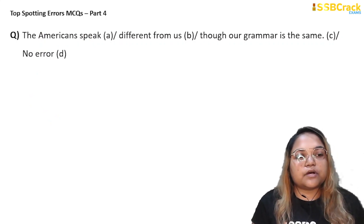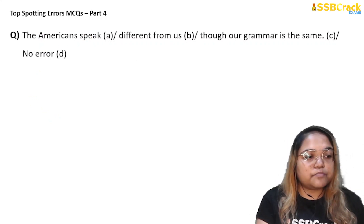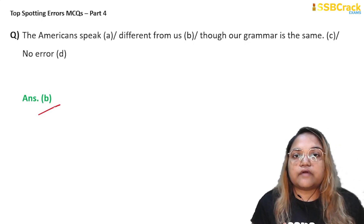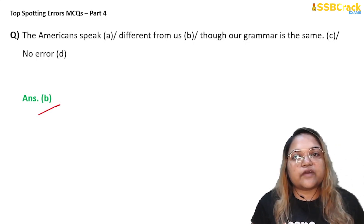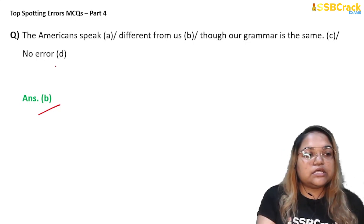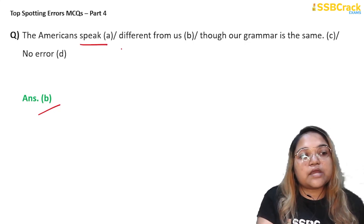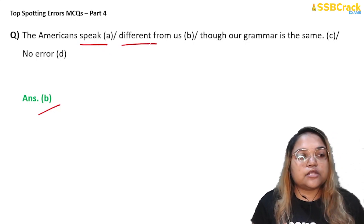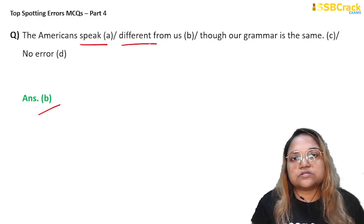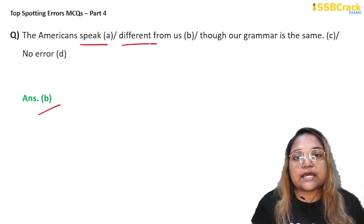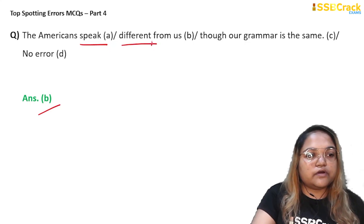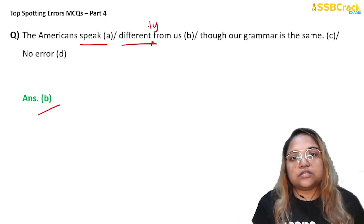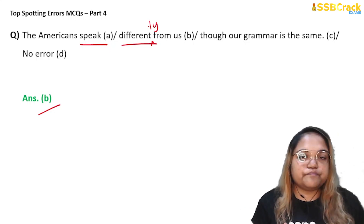Next question: 'The Americans speak different from us though our grammar is the same.' The error is in part B, so the answer is option B. To modify a verb, we use an adverb, but here the adjective 'different' is used to modify the verb 'speak,' which is wrong. Instead of 'speak different,' we must say 'speak differently.' You need to convert the adjective into an adverb by adding '-ly.' So option B is the right answer.